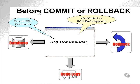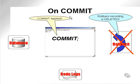Now we can see the same process graphically. In this case, I've executed some SQL commands and no commit or rollback has been applied. What has actually happened is the changes have been written to the database. The changes have been recorded in the redo logs and rollback has been built to enable future potential undo of the database changes. When I execute a commit command, all that happens is that the rollback recording is deleted. On commit, the database changes and the redo logs remain as they are because both have already been altered.